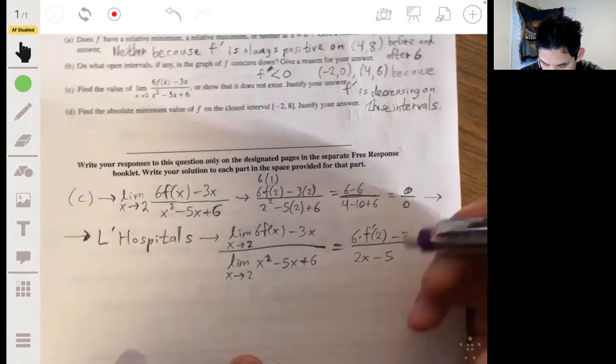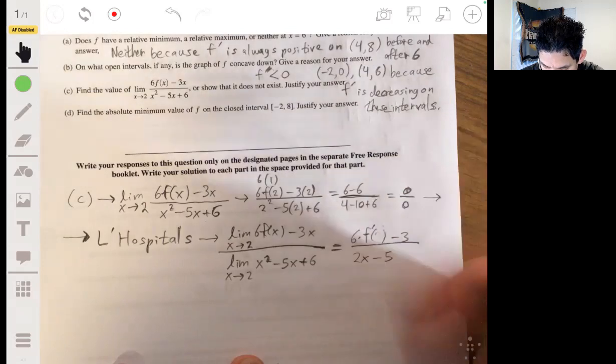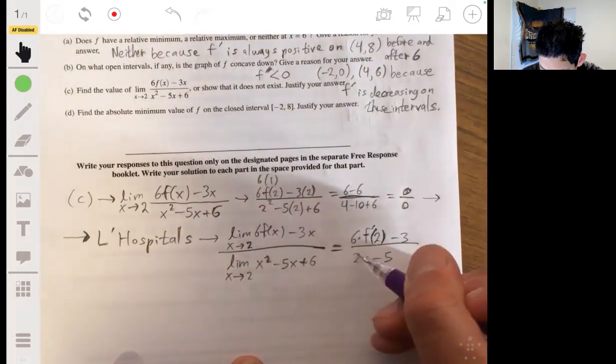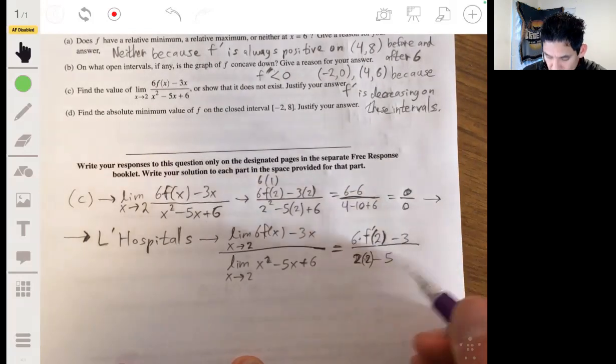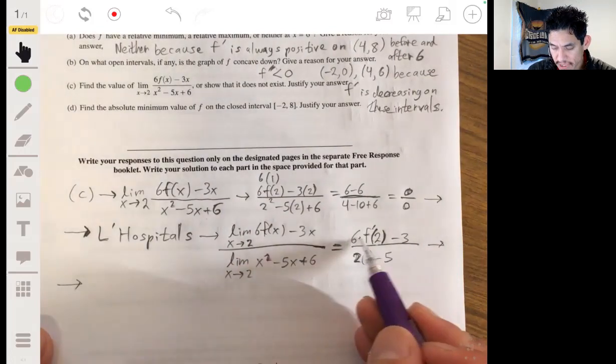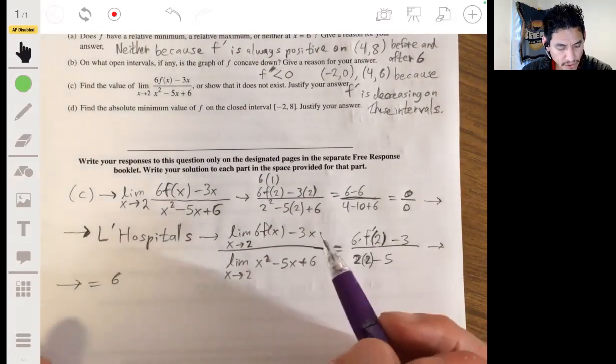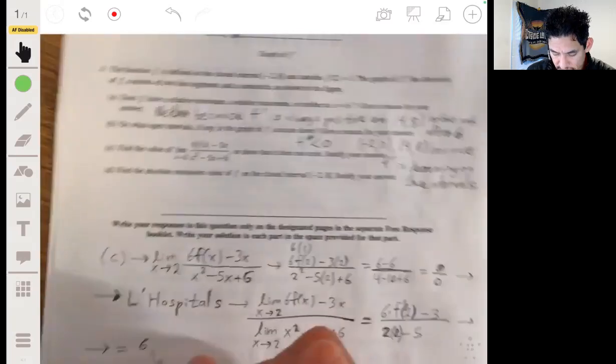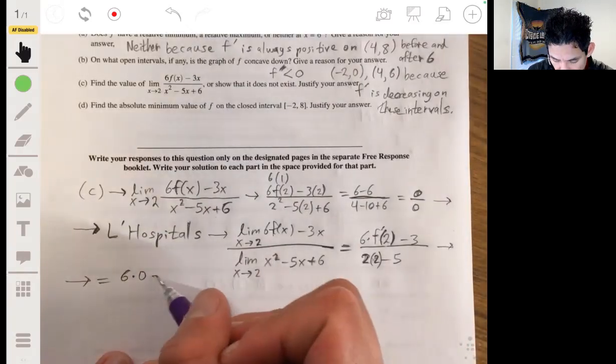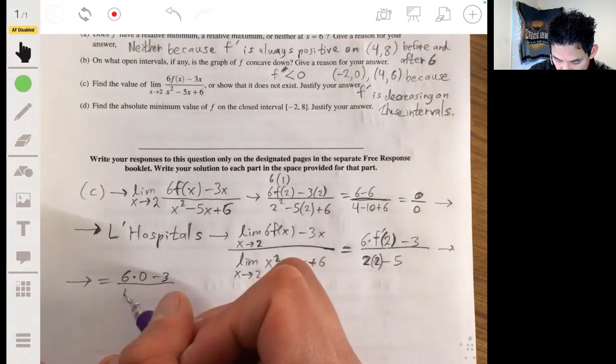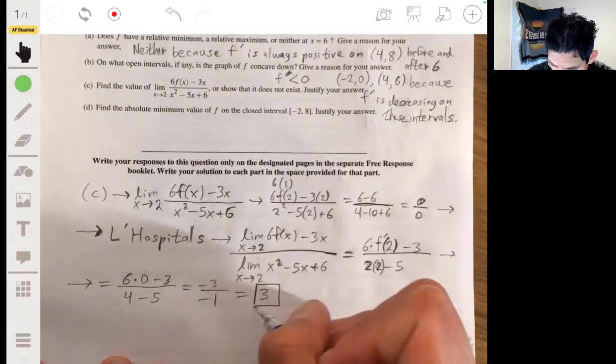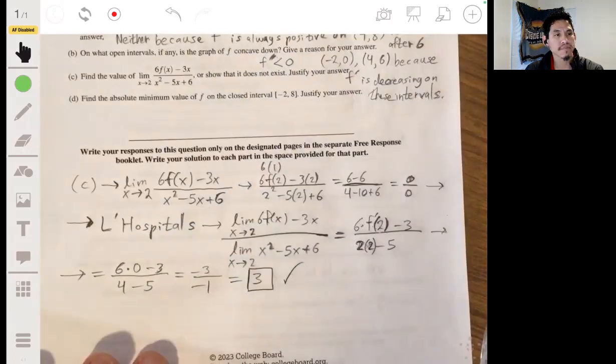And from here, we work it out. 6 times f prime of 2. Let's look at what the derivative is at 2. It's simply the y value here. So it's 0. So we have 6 times 0 minus 3 all over 4 minus 5. And we would get negative 3 over negative 1. And our answer would be 3.